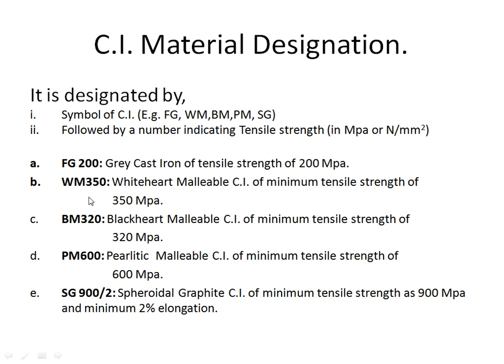Next, WM — that is white heart malleable cast iron. WM350: it is white heart malleable cast iron having minimum tensile strength of 350 MPa.